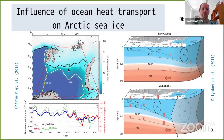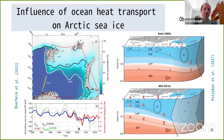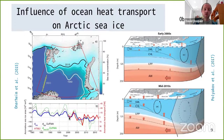A study by Årthun showed a strong reduction in sea ice concentration in the Barents Sea in winter — the ice edge in 1980 compared to 2015 shows a clear retreat. The time series shows in blue the annual mean sea ice area in the Barents Sea and in black the winter anomaly. The annual sea ice area is strongly driven by the winter anomaly and is strongly anti-correlated with ocean heat transport at the Barents Sea Opening, shown in red on a reversed axis.